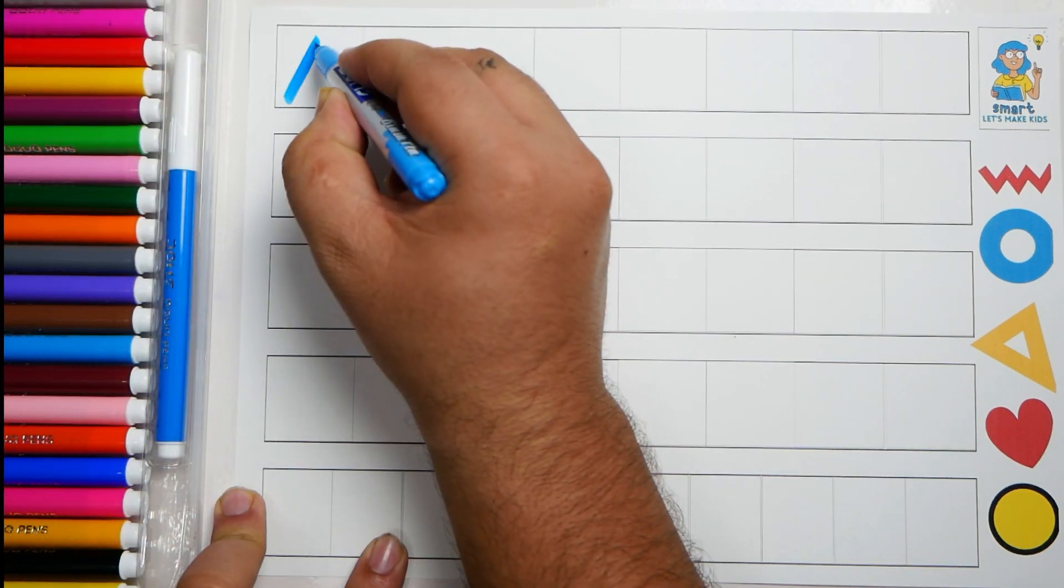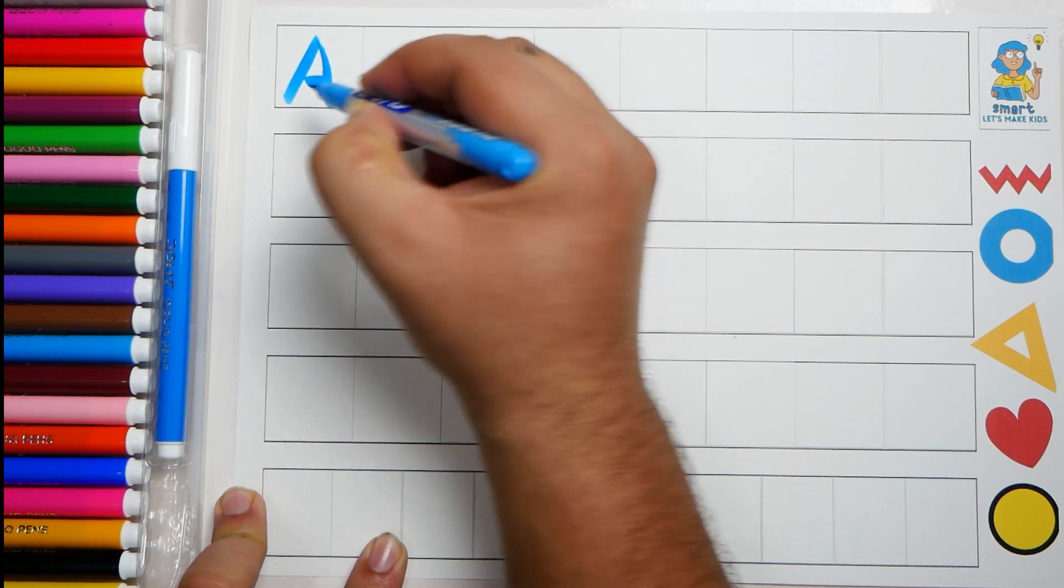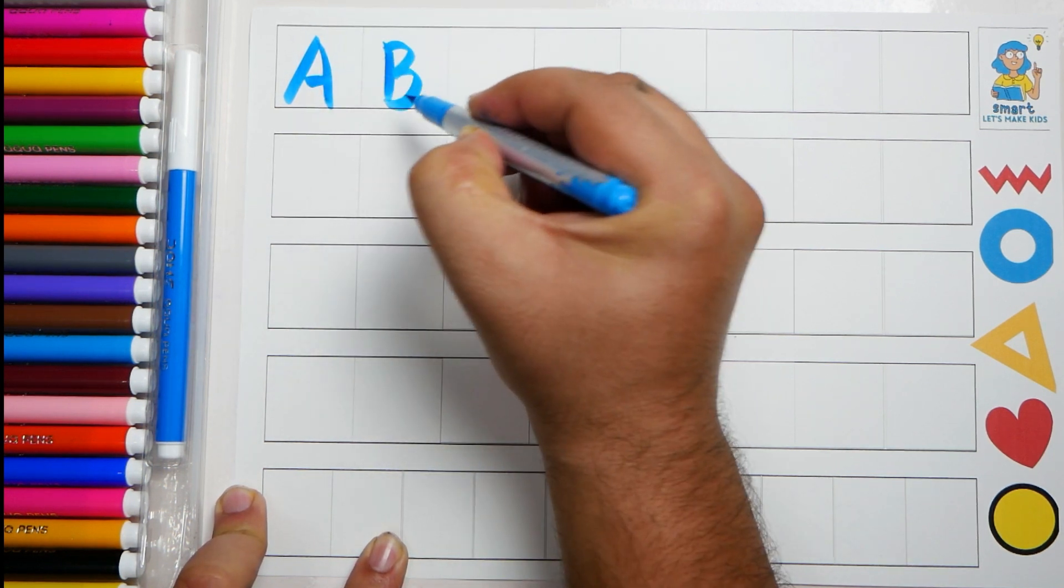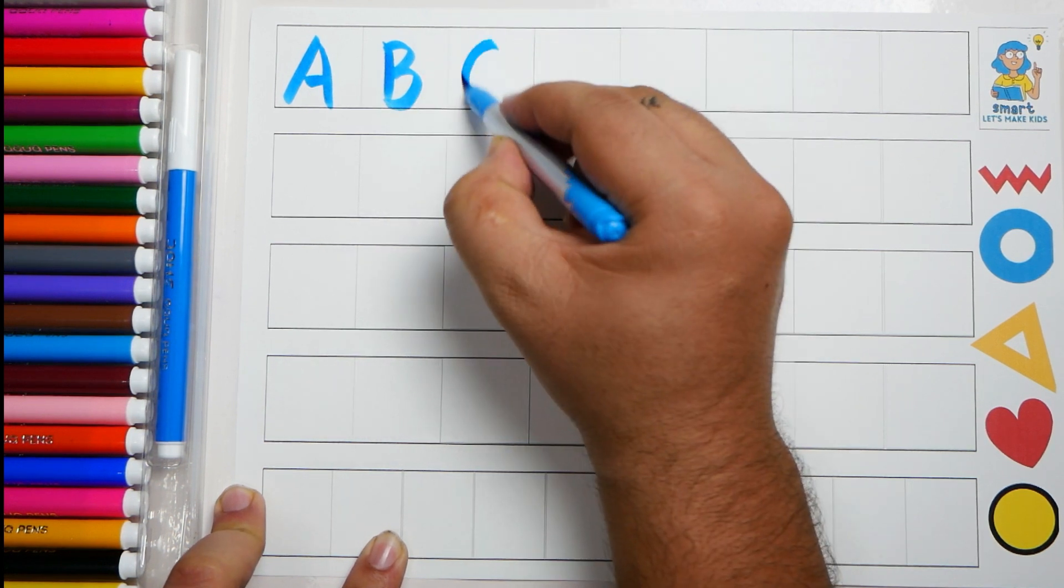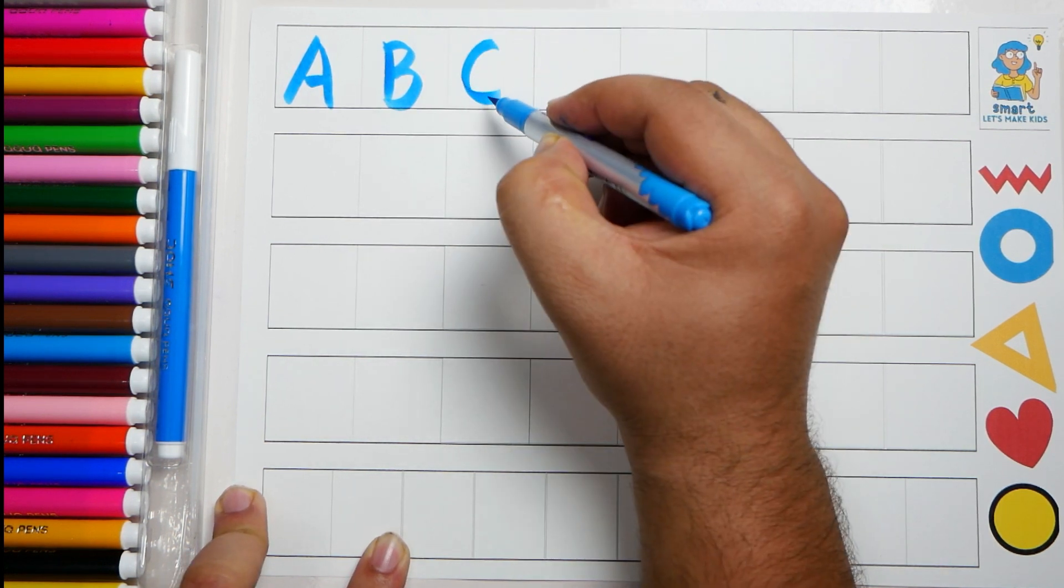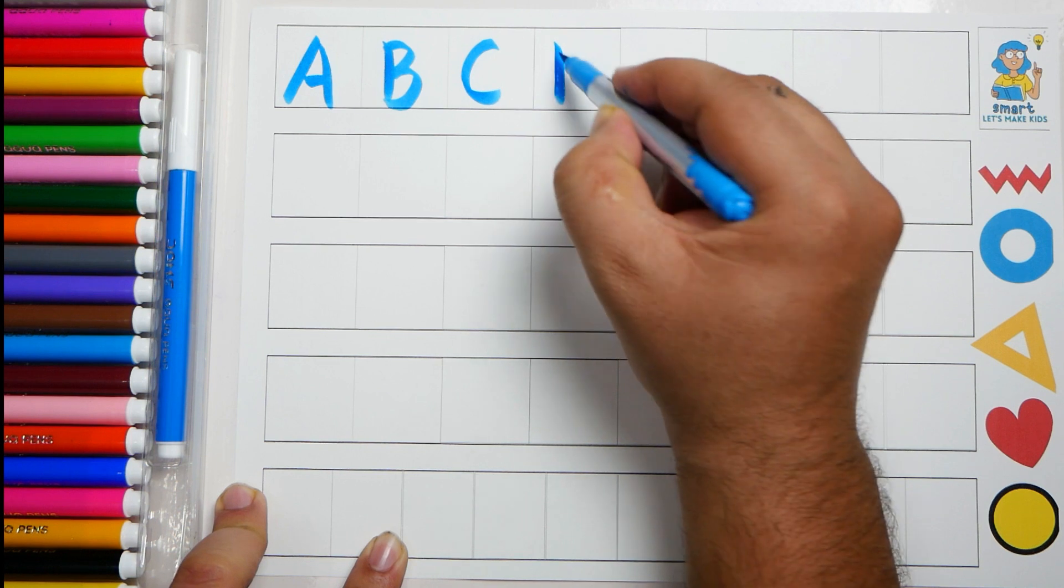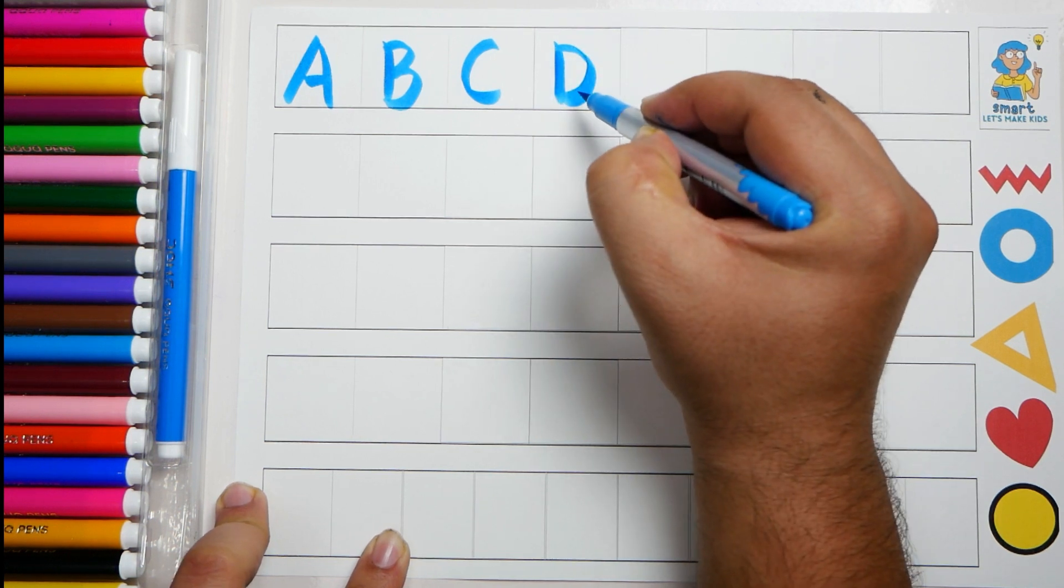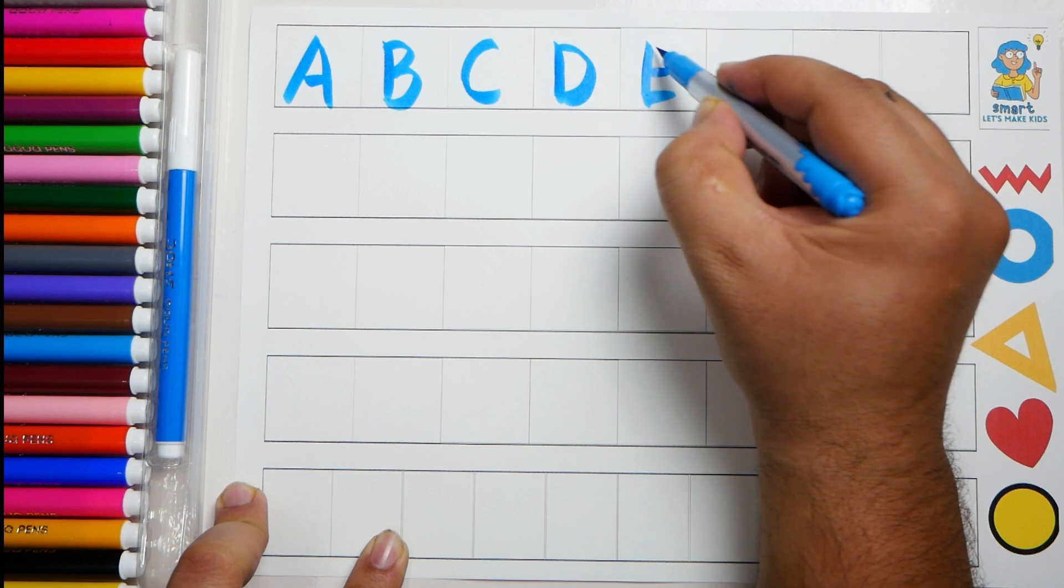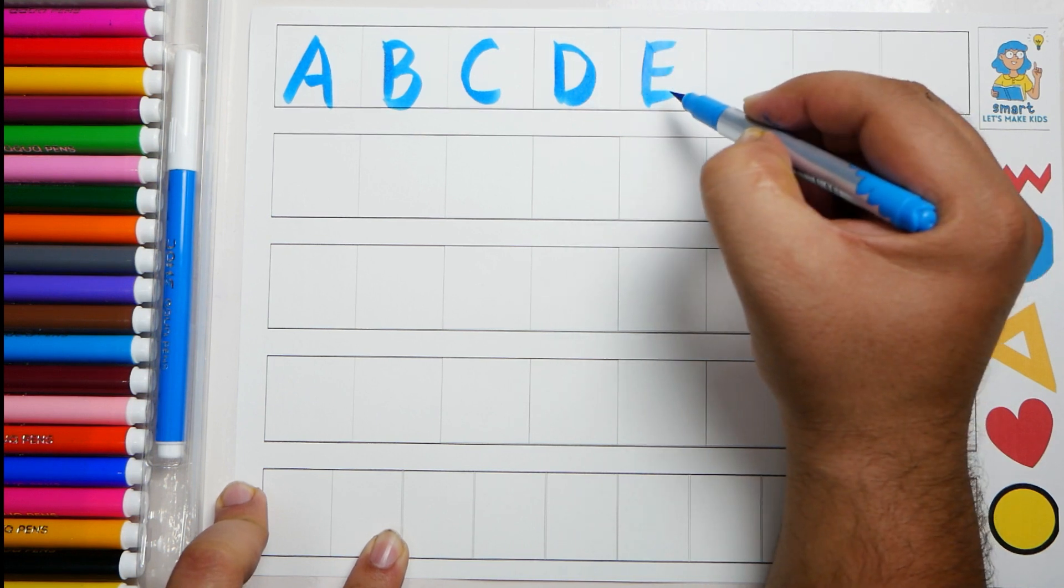A, A for apple. B, B for ball. C, C for cat. D, D for dog. E, E for elephant.